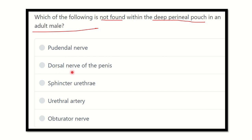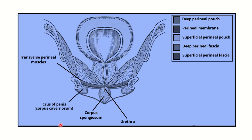dorsal nerve of the penis, sphincter urethrae, urethral artery, and obturator nerve.